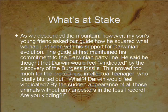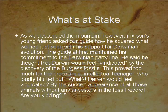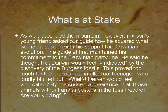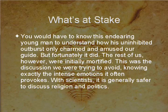As they descended the mountain, Meyer's son's young friend asked the guide how he squared what they had seen with his support for Darwinian evolution. The guide maintained the Darwinian party line, saying Darwin would feel vindicated by the Burgess fossils. This proved too much for the teenager, who loudly blurted out: 'Darwin would feel vindicated by the sudden appearance of all these animals without any ancestors in the fossil record? Are you kidding?' The rest of the group was initially mortified — this was the discussion they were trying to avoid.